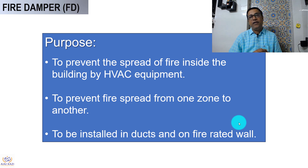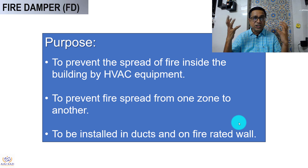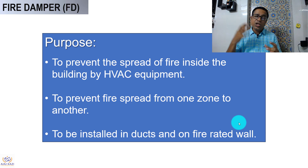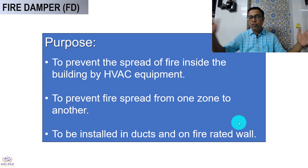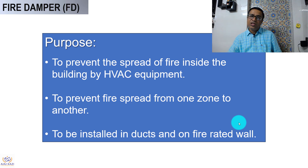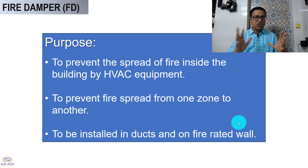The next damper is the fire damper, also called FD. This is to prevent the spread of fire inside the building by the HVAC equipment. It is installed after the HVAC equipment and also used to prevent fire from spreading from one zone to another. If you have two zones with a fire-rated wall, the fire damper prevents fire from crossing between them. These are installed in ducts as well as on the fire-rated wall.